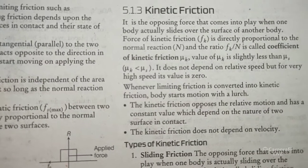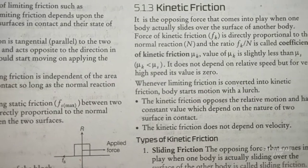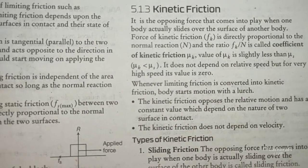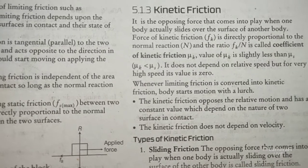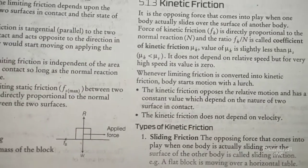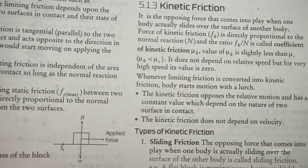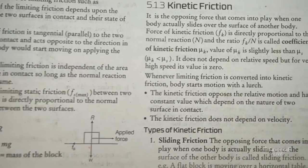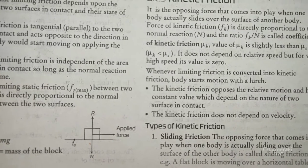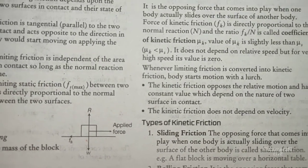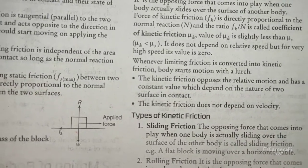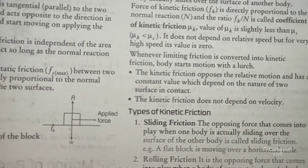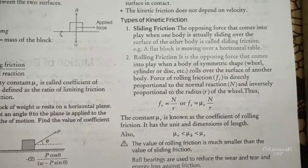We have two coefficients: μs (static) and μk (kinetic). Static is more than kinetic — μk is slightly less than μs. Kinetic friction does not depend on relative speed, but at very high speeds it approaches zero, because the contact time between surfaces becomes very small. The kinetic friction opposes relative motion and has a constant value depending on the nature of the two surfaces in contact. It does not depend on velocity.